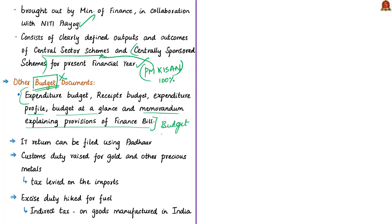The article states that the income tax return can now be filed using Aadhaar — previously the requirement of a Permanent Account Number (PAN) was compulsory. Because of this announcement, it is expected that many more individuals will file income tax returns. A detailed analysis based on this will be done later in our discussion.